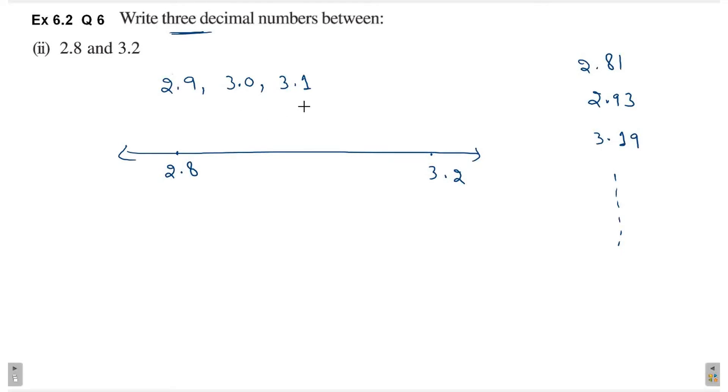So you can write these simplest numbers, or you can write any number of this type as well. Because all these numbers lie between 2.8 and 3.2.